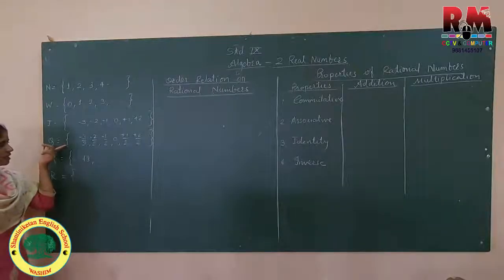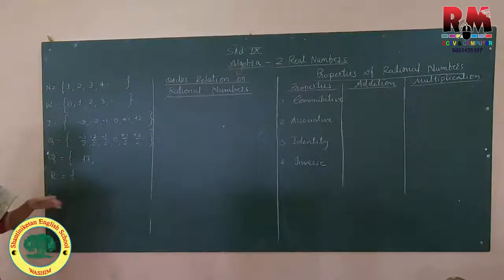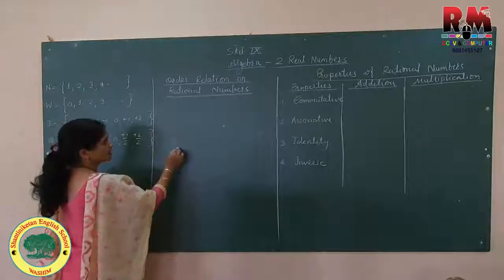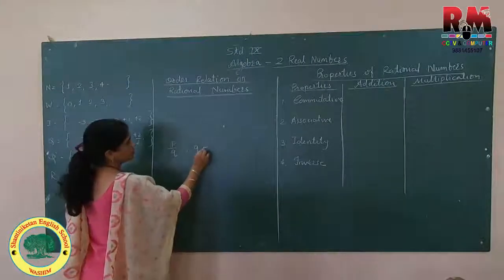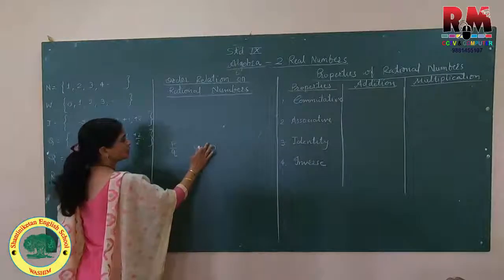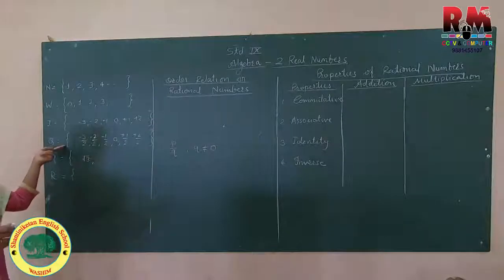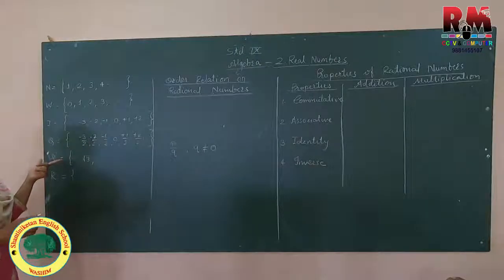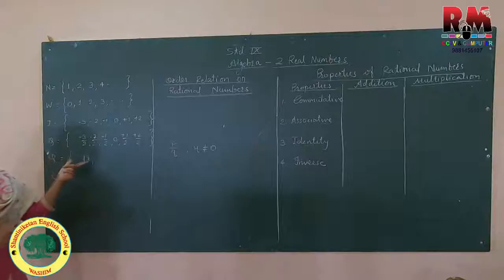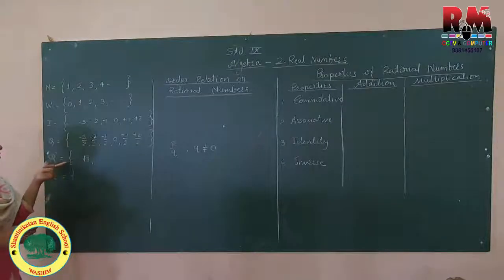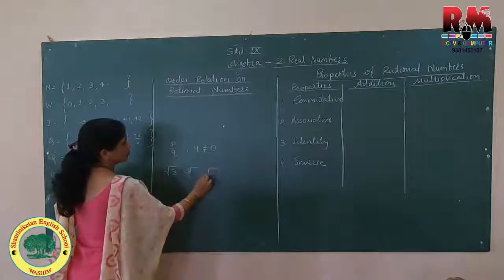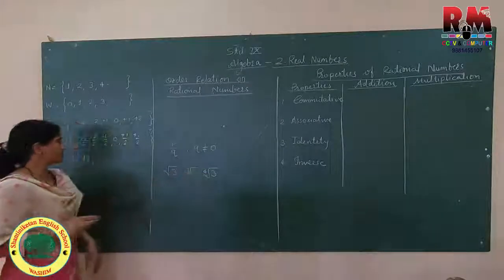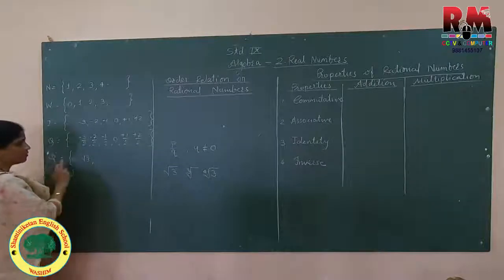Fourth set is the set of rational numbers. What is meant by a rational number? The numbers which are written in the form of P upon Q are called rational numbers, where Q is not equal to 0. Next, the set of irrational numbers — the numbers which are in the form of square root, cube root, or 4th root are elements of the set of irrational numbers.